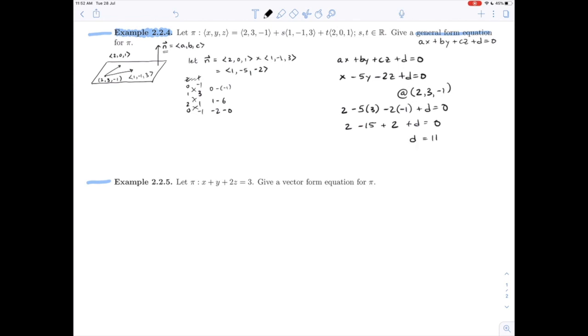And so we can give our equation as x minus 5y minus 2z plus 11 equals 0, or you can move that 11 over to the other side to -11 if you want to. So there's example 2.2.4.